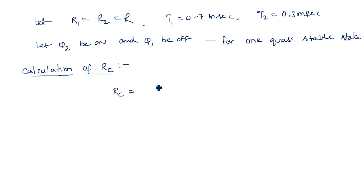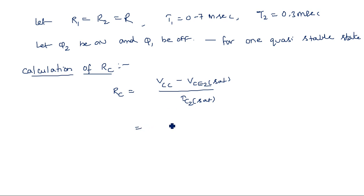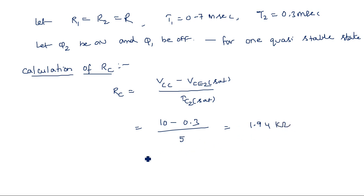Rc equals (Vcc minus Vce_sat) divided by Ic2_sat. With Vcc equal to 10 volts, Vce_sat equal to 0.3 volts, and Ic_sat equal to 5 milliamperes: Rc equals (10 minus 0.3) divided by 5 milliamperes, which equals 1.94 kilo ohms. Therefore Rc equals 1.94 kΩ.